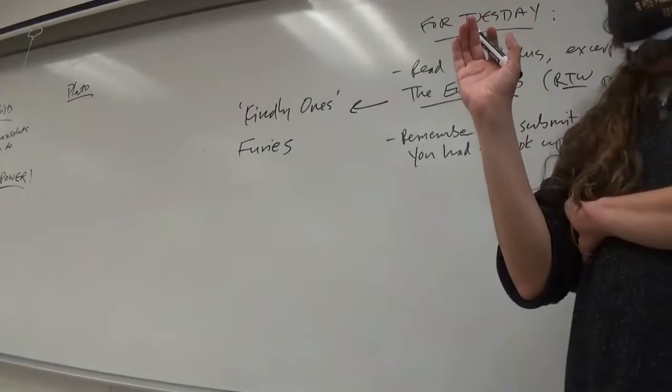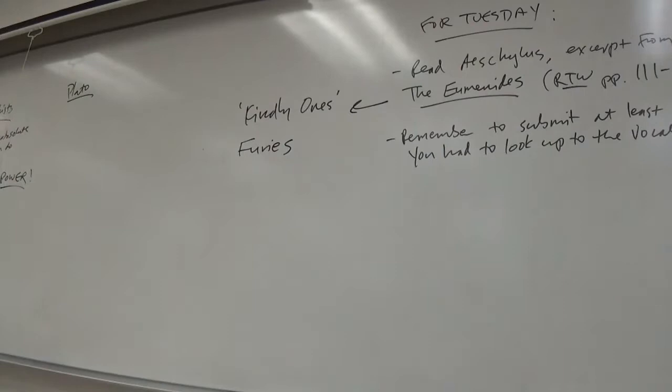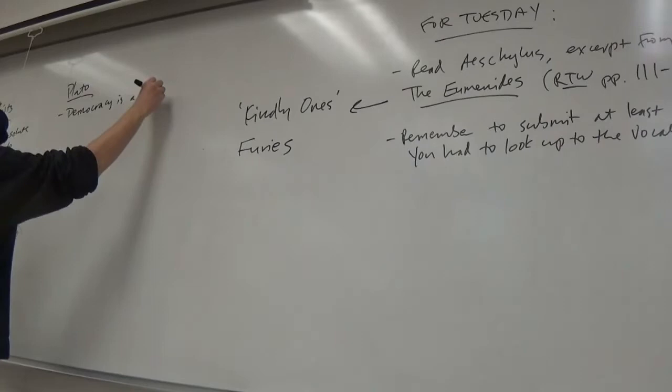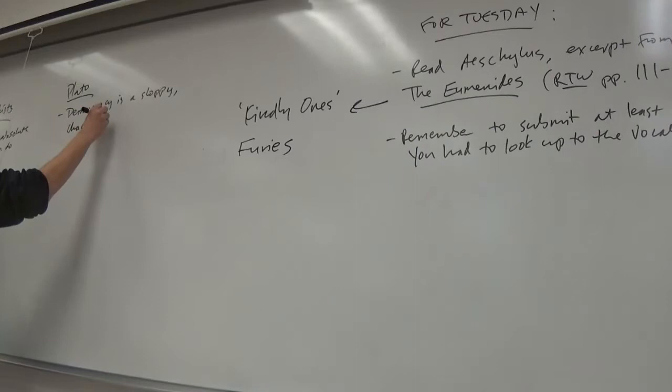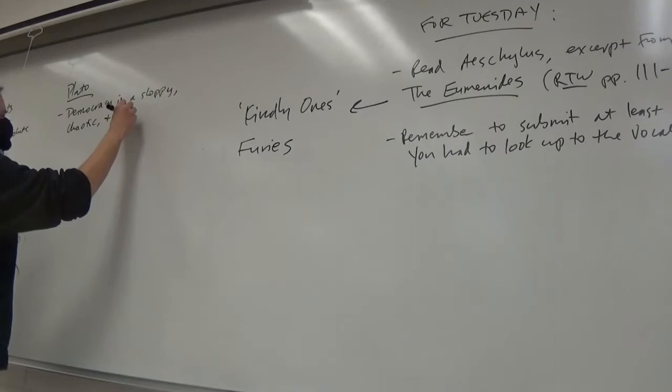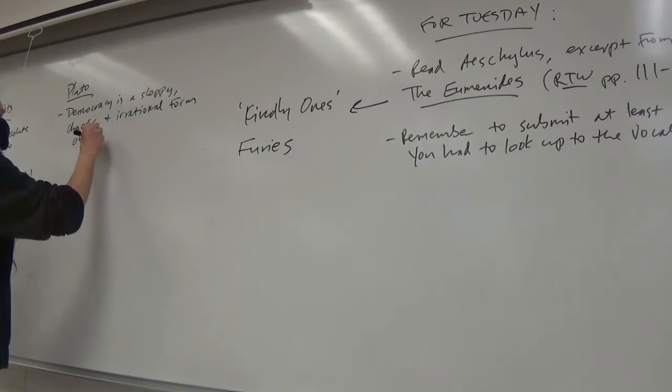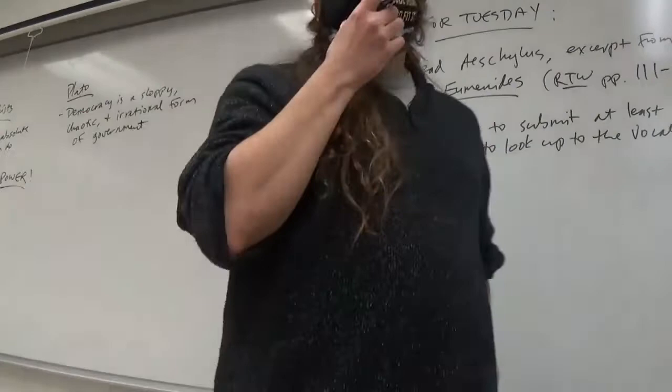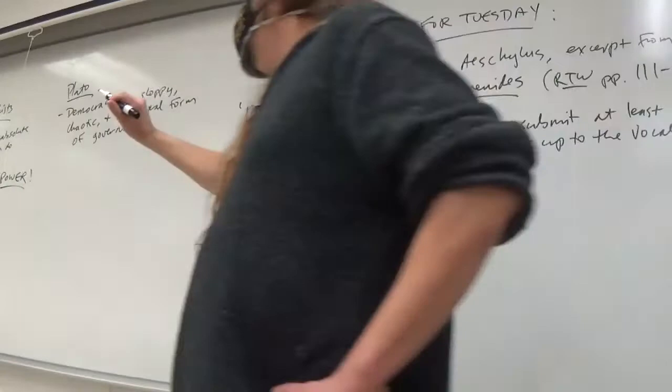Gorgias does backtrack a little bit at the end of Tuesday's excerpt and says, but you shouldn't use this for evil ends. And what about Plato's position? What do we remember about Plato's basic beliefs about reality? Plato believes that democracy is an issue just because of those issues. You can pursue anything more. Yeah. First off, democracy is a sloppy, chaotic, and unstable form of government. Irrational form of government. Because the masses can be so easily swayed by a persuasive speaker.